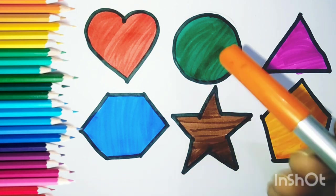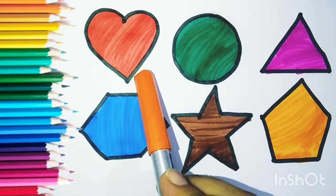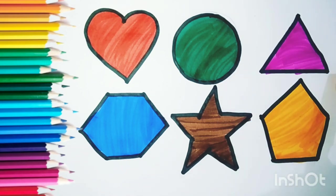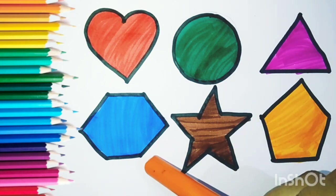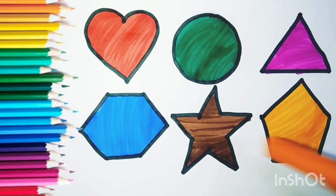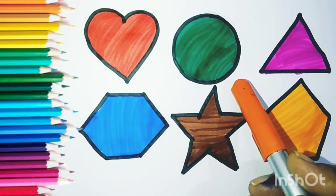Now we learned with me the shapes: heart shape, circle, triangle, hexagon, star, pentagon. Now the colors: red, deep green, pink, sky blue, brown, and this is orange color.